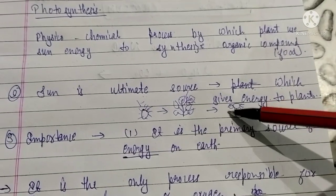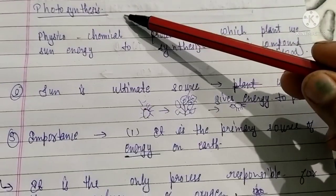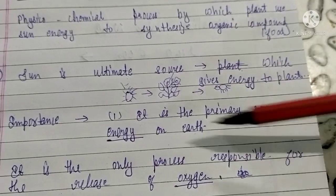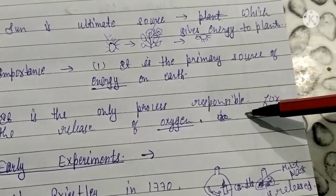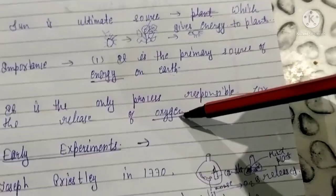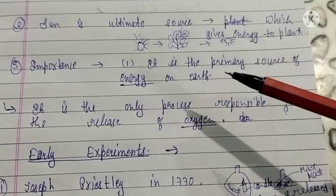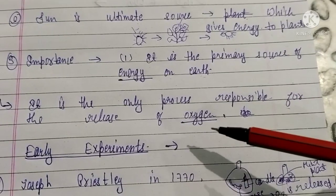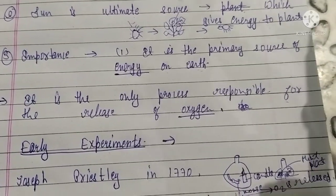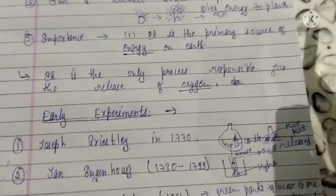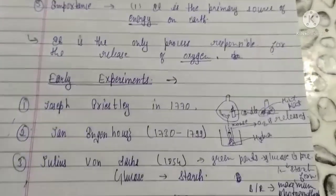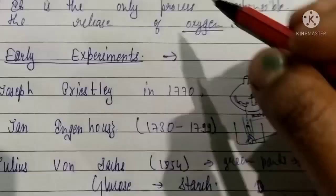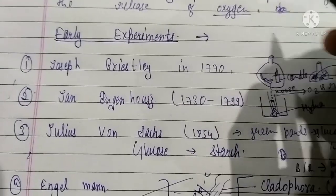The importance of photosynthesis: it is the primary source of energy on Earth, and it is the only process responsible for the release of oxygen. Now we are going to study the early experiments.